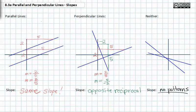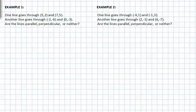Let's try some examples. Our first example says that a line goes through five, two and seven, five. Another line goes through negative two, negative six and zero, negative three. Are the lines parallel, perpendicular, or neither? This is where we have to find what our slope-intercept equation is to determine whether these lines are parallel or perpendicular to each other. Let's first find the slope of each.